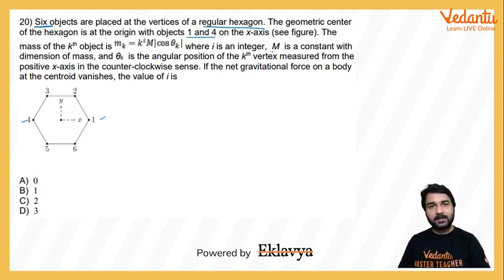Where i is an integer, M is a constant with dimensions of mass, and theta k is the angular position of kth vertex measured from the positive x-axis in the counterclockwise sense. If net gravitational force on a body at the centroid vanishes, this point is important.